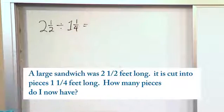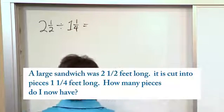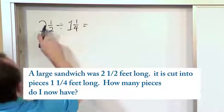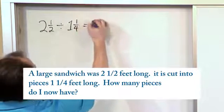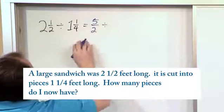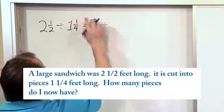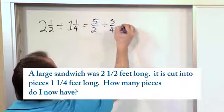This is something we know how to do. First, we change these to improper fractions. Two times two is four, plus one is five, and you write it over two: 5/2. Keep the division symbol. This becomes one times four is four, plus one is five over four: 5/4.